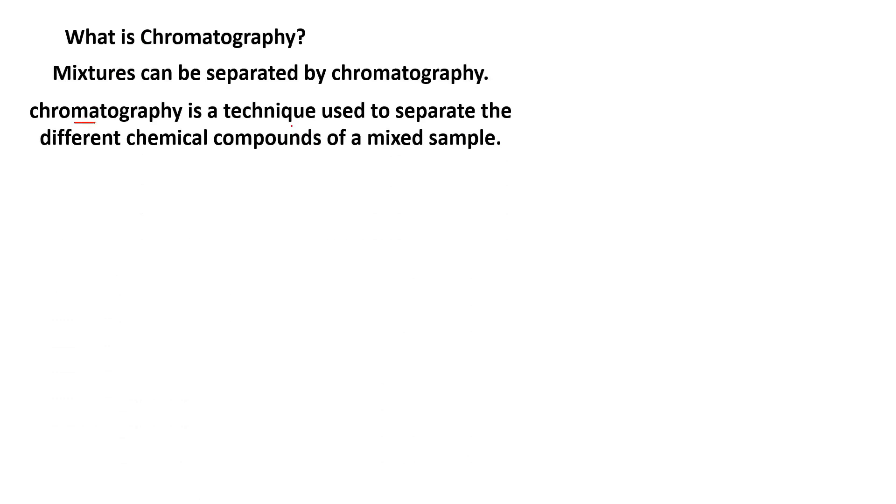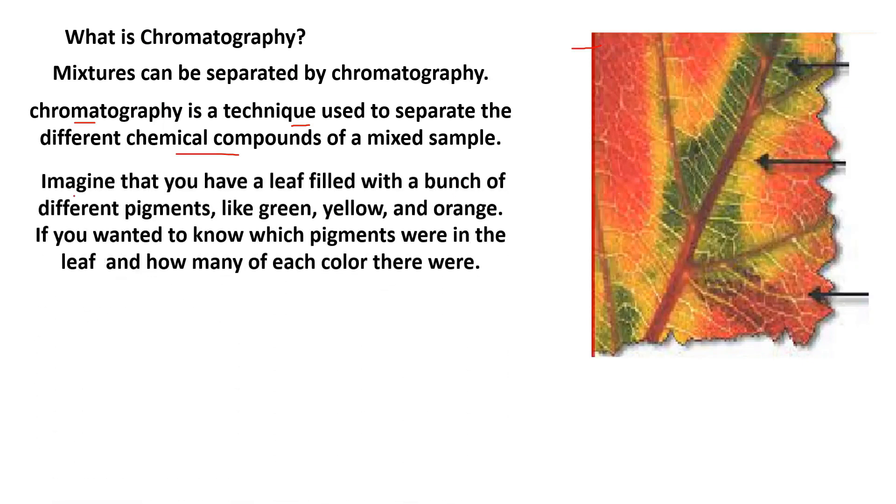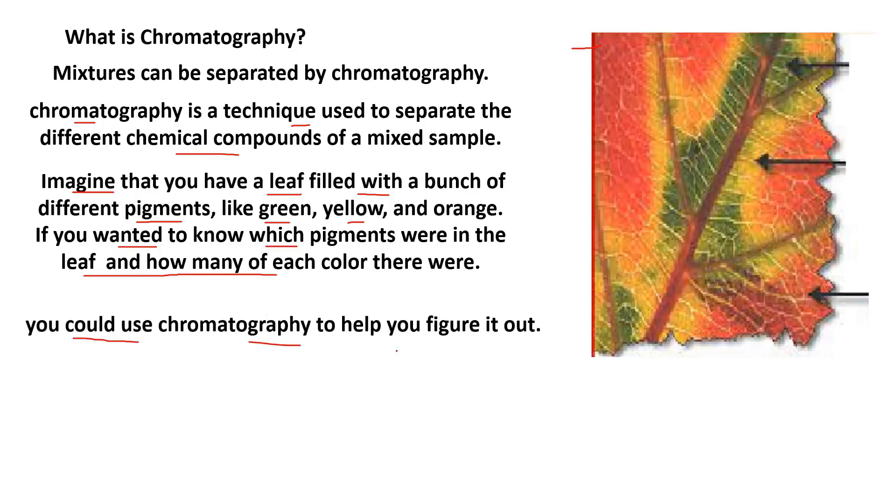This technique is used to separate different chemical compounds of a mixed sample. For example, you have a leaf filled with different pigments like green, yellow, and orange. If you wanted to know which pigments were in the leaf and how many of each color, you could use chromatography to help you figure it out.